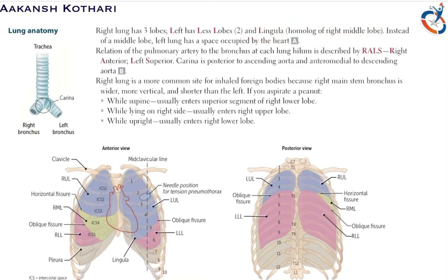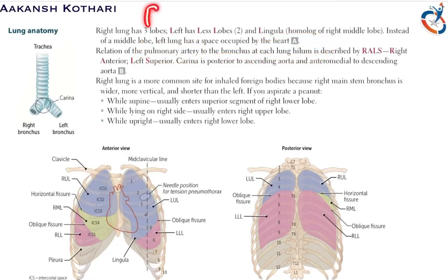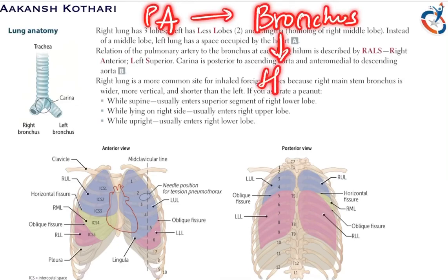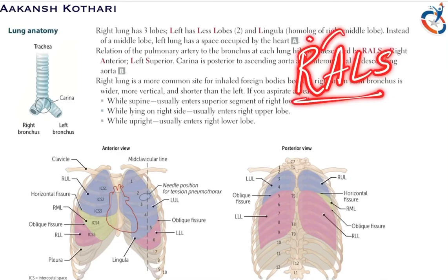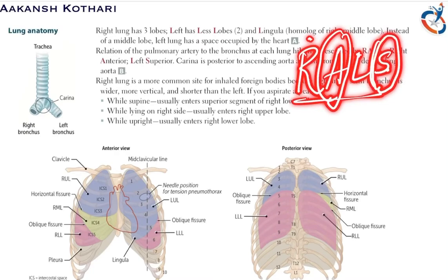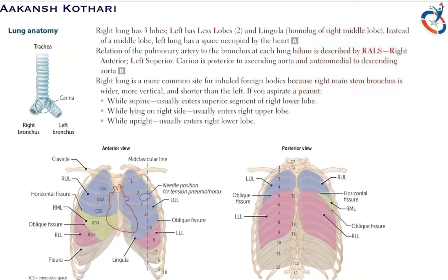The relation of the pulmonary artery to the bronchus at each lung hilum is very important. Remember the mnemonic RALS: in the right lung the pulmonary artery is anterior to the bronchus, whereas in the left lung the pulmonary artery is superior to the bronchus at the hilum.